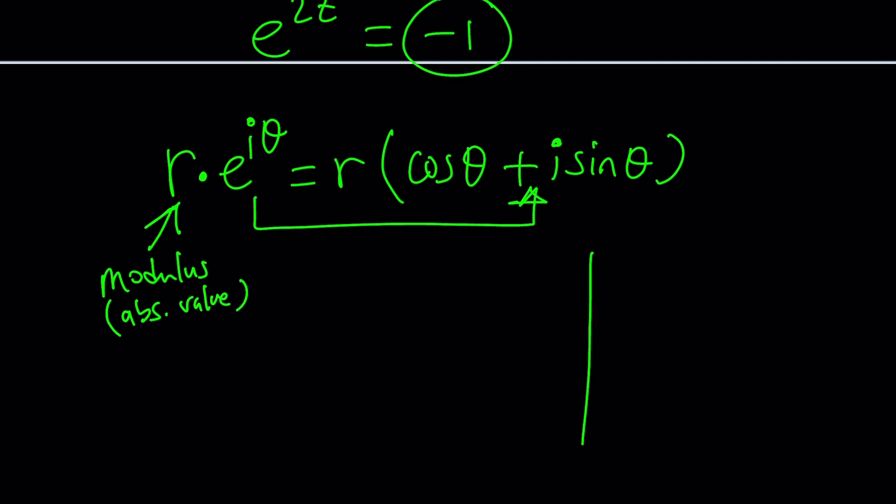Modulus or absolute value. And on the coordinate plane, it basically represents the distance from zero. So if you have a complex number z, then its distance from zero is given by the absolute value, or just R. And theta is the angle. By the way, these are called real and imaginary axes. And this is called the Argand plane.